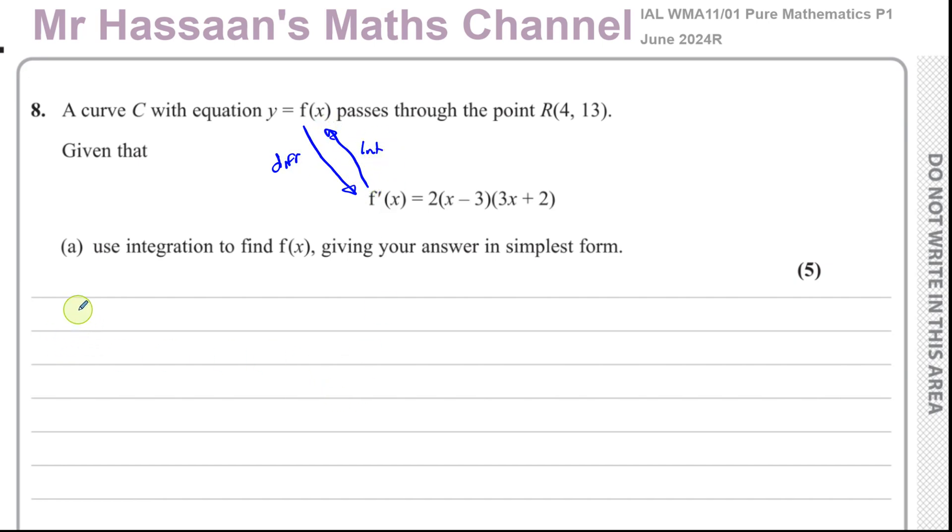We know y is going to be the integral of f'(x) with respect to x. What we have to do is first get this ready for integration. Let's take f'(x) and simplify it first. This is going to be 2 times, we're going to expand this bracket. x minus 3 times 3x plus 2, that's going to give you 3x² plus 2x and minus 9x.